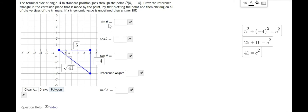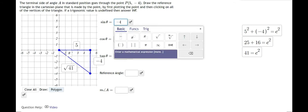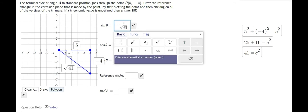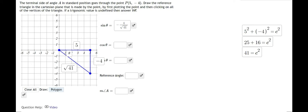Sine is the opposite over the hypotenuse. So here, this would be the opposite, negative 4 over the hypotenuse. So here, I'm just going to type in negative 4 over the square root of 41. So that's my sine ratio.